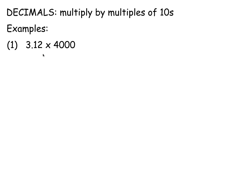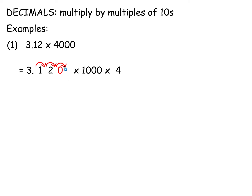Where this is used in calculations: if you want to multiply 3.12 by 4,000, multiply by 1,000 first and then by 4. So 3.12 multiplied by 1,000 shifts the decimal point three places, becoming 3,120 times 4. Then just a normal multiplication: 4 zeros, 4 twos, 4 ones, 4 threes. Any working can be done at the side. Basically, to multiply by something like 4,000, multiply by the 1,000 first — shifting the point — and then by the 4.